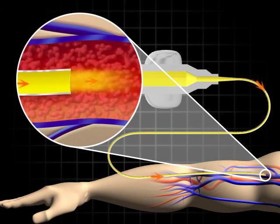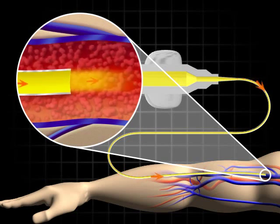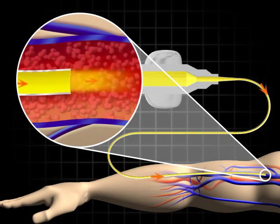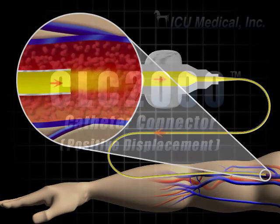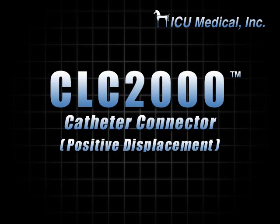The result is a constant flow of positive fluid while disconnecting the infusion device, which is guaranteed to displace 100% of potential blood reflux.